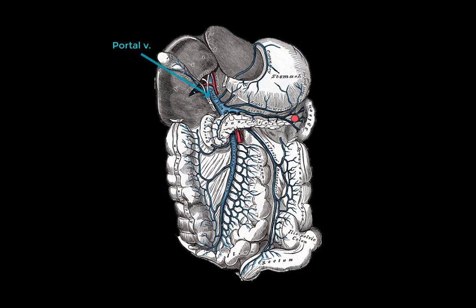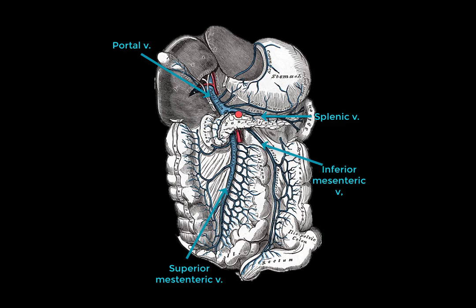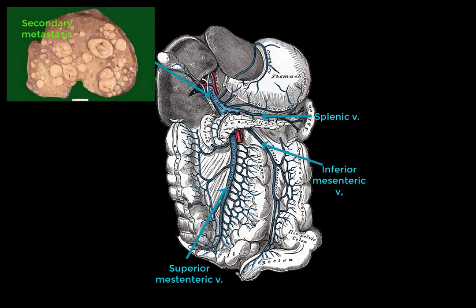You can see how the portal vein is formed by the splenic vein and the superior mesenteric vein. There is also an inferior mesenteric vein that usually joins the splenic vein, and there are veins joining the portal vein from the stomach. This means that all the venous blood drained from the gastrointestinal tract distal to the esophagus reaches the liver before it reaches the systemic circulation. Because there is a lot of blood reaching the liver from multiple sources, the liver becomes a common site of metastasis of tumors from organs drained by the portal system.